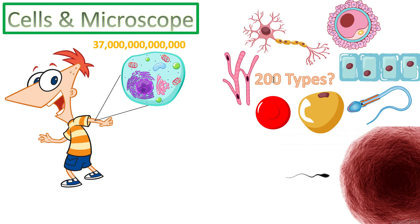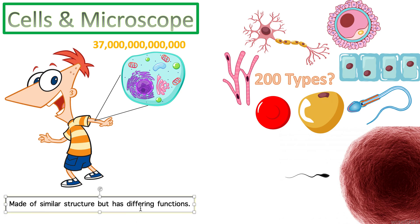There are over 200 types of cells. For example, you have fat cells, heart muscle cells called cardiomyocytes, neurons or nerve cells, sex cells like sperm and egg, skin cells, blood cells, and so many more. They all have a similar structure — a nucleus, mitochondria, and other organelles — but they are specialized with different functions, which is what makes us so complex.